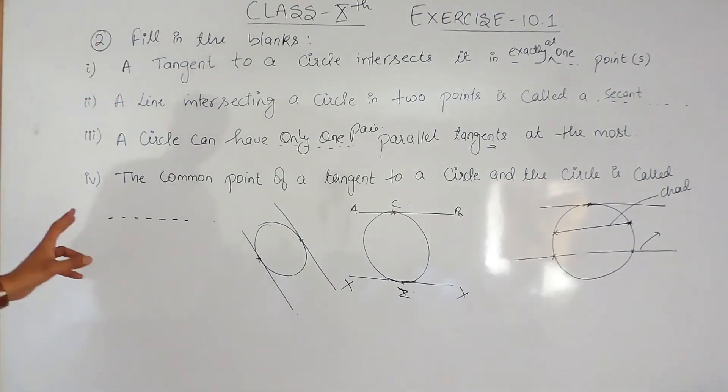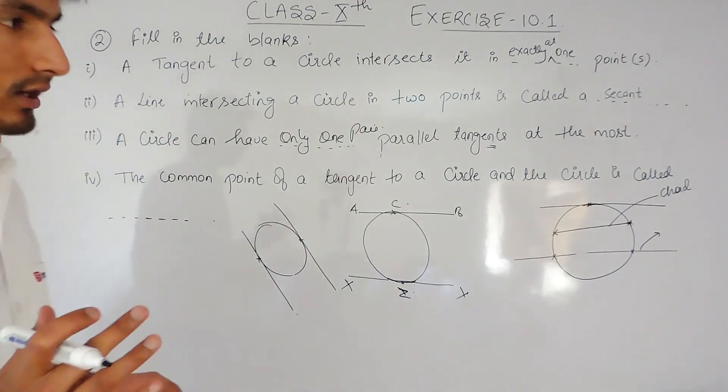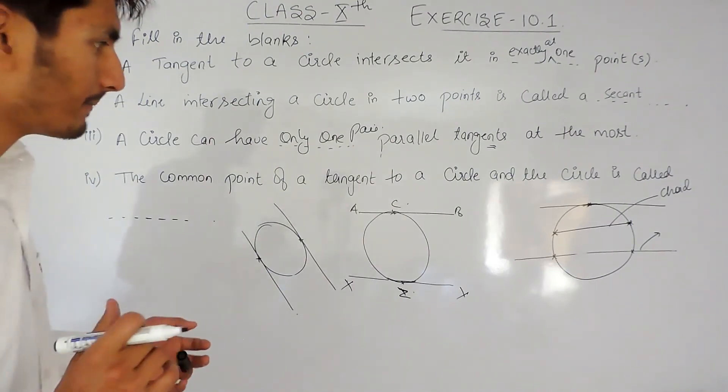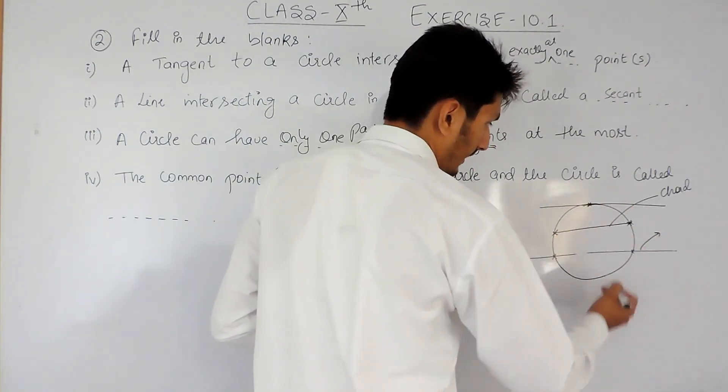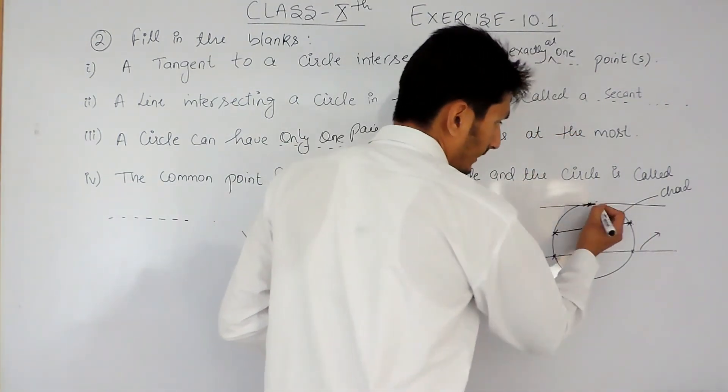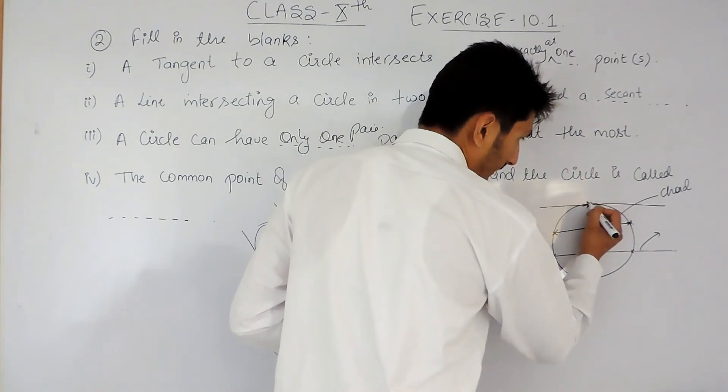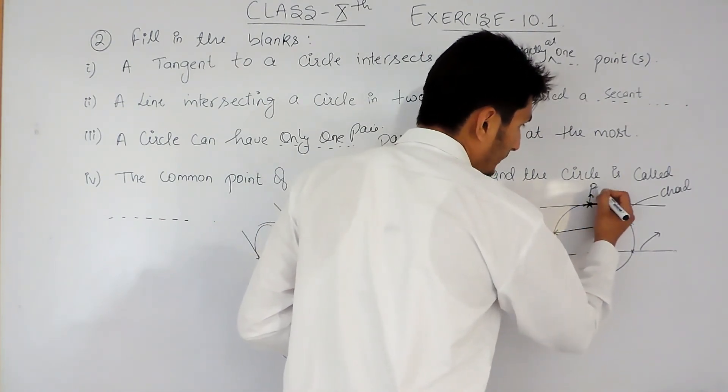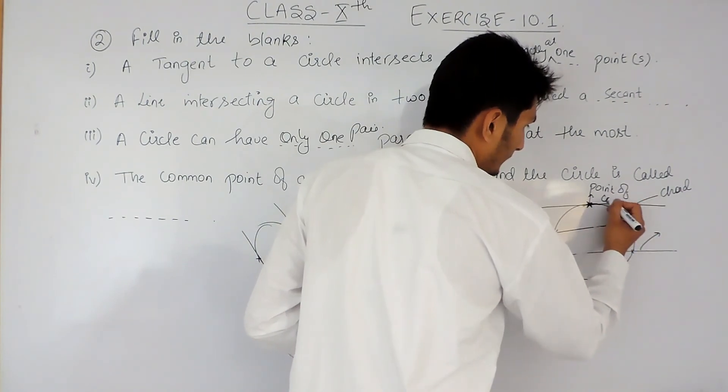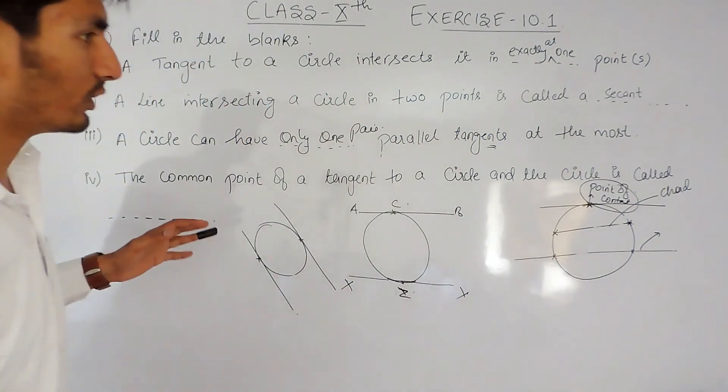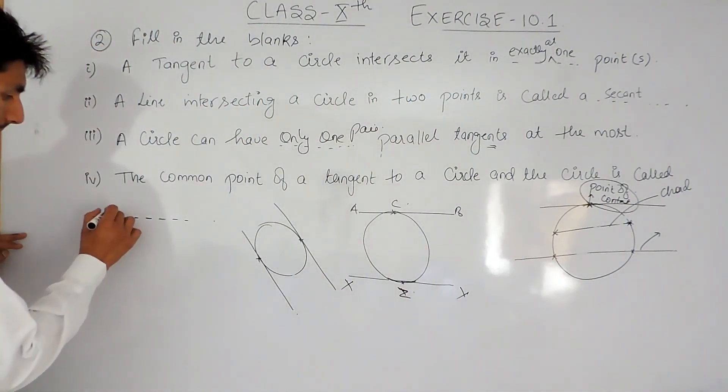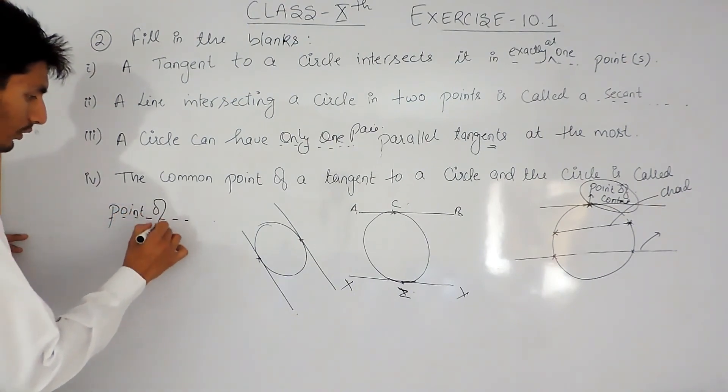Now the last one: the common point of a tangent to a circle and the circle is called _____. If this is a circle and we have drawn a tangent to it, this intersecting point is known as the point of contact.